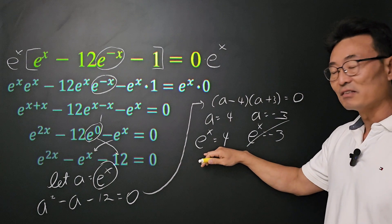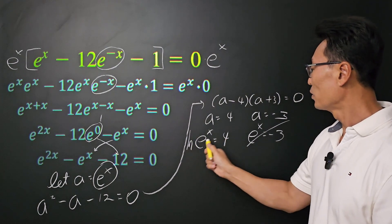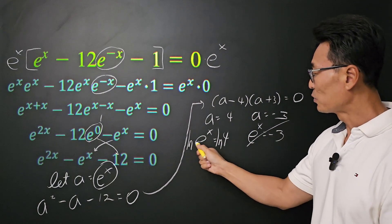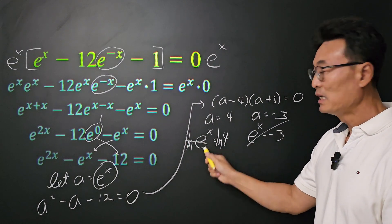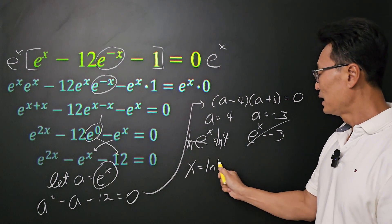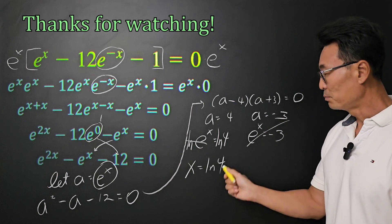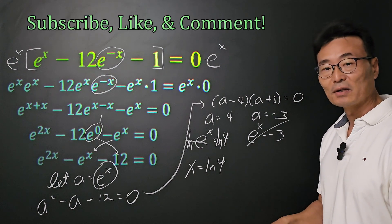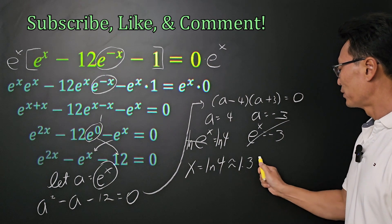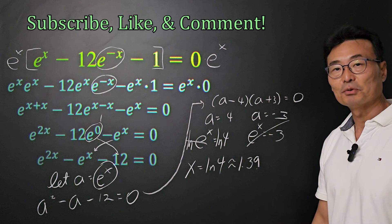We're going to focus on e to the x equals 4. To find the x value, what we could do is take the natural log of both the left and the right side, where the natural log and the e will cancel out, and we're left with only x on the left side. We now have our answer: natural log of 4. And if you put natural log of 4 in the calculator, it's going to equal 1.39, rounded off to 2 decimal places.